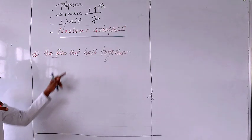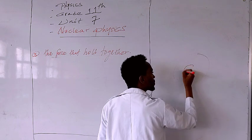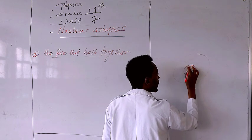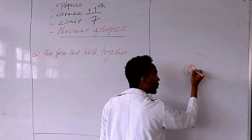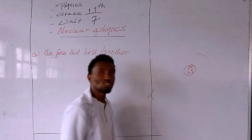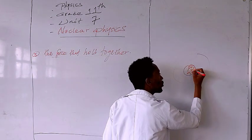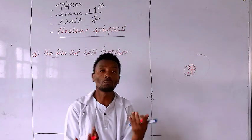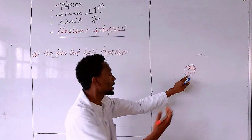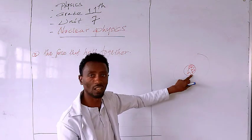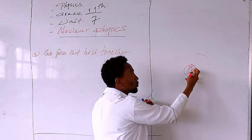What force holds the nucleus together? In the nucleus, there are protons — protons carry a positive charge. These positive charges in the nucleus repel each other. So with many positive charges, we would expect the nucleus to explode. Neutrons carry no charge, but protons carry a positive charge. So with both protons and neutrons inside, the nucleus holds together because of one special force — the nuclear force.